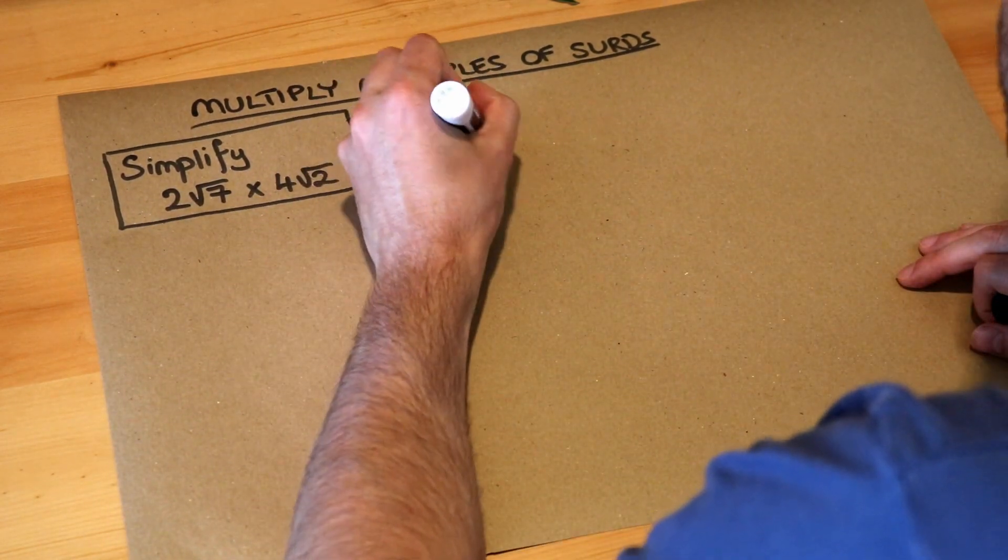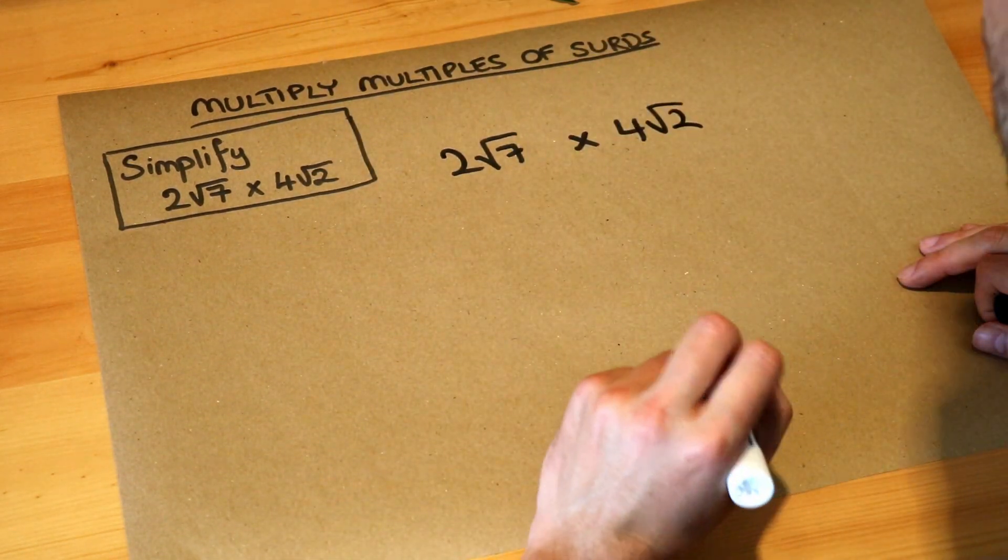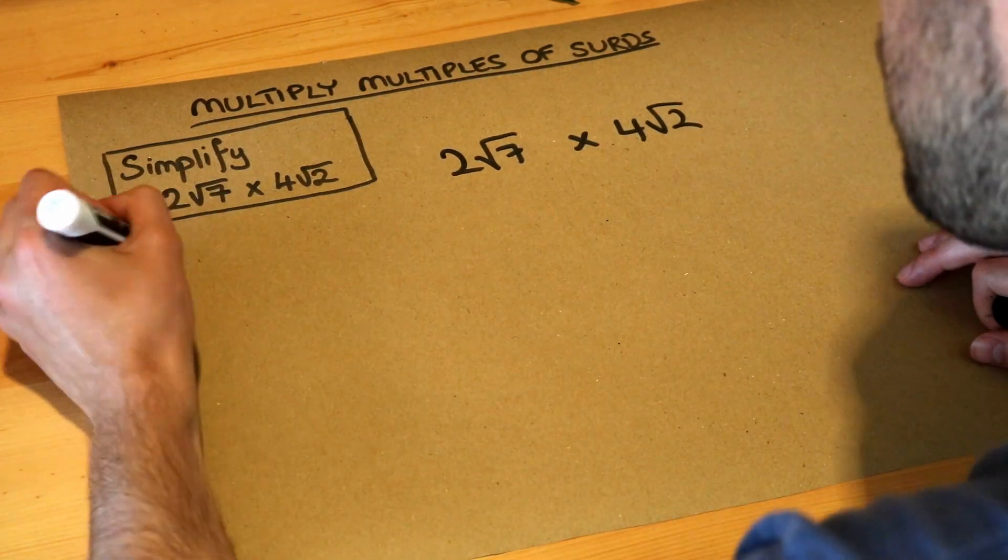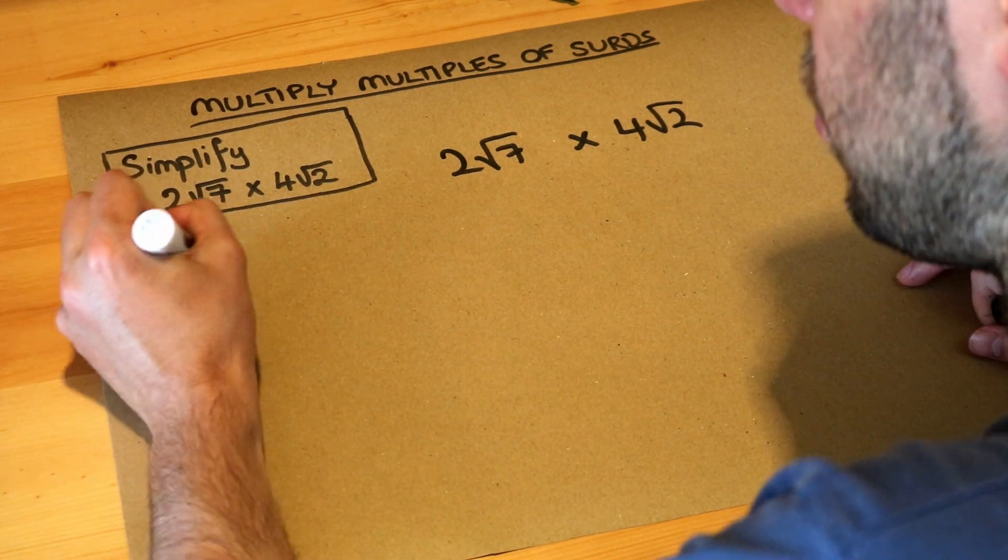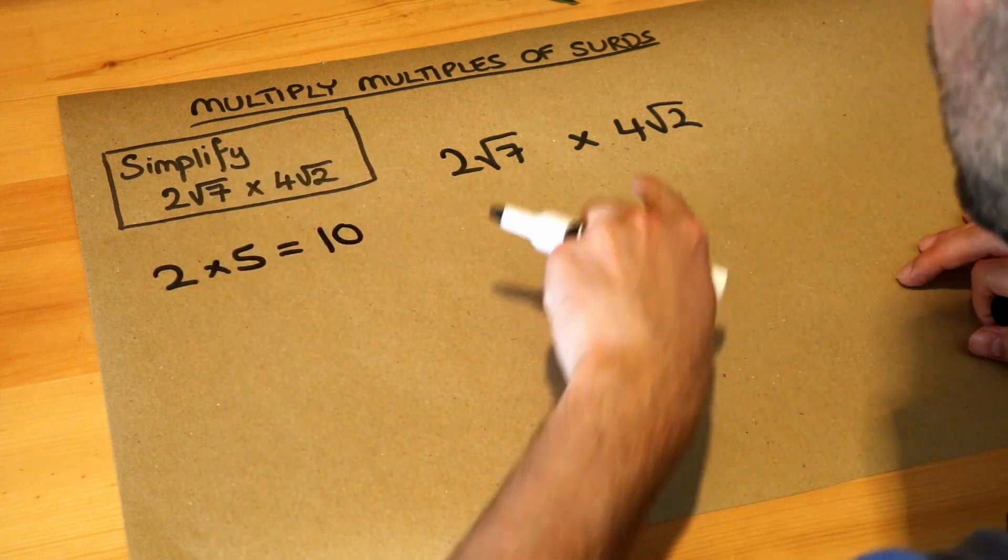Now when we multiply expressions like this together, there's one key thing we've got to think about. You can multiply normal numbers together, so if I had say two times five, that's ten.